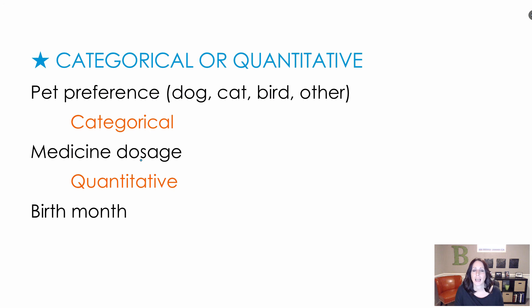And the last one, the birth month. Again, even though we're dealing probably with numbers 1 through 12, it's still categorical because we're looking at how many are in January, February, etc.